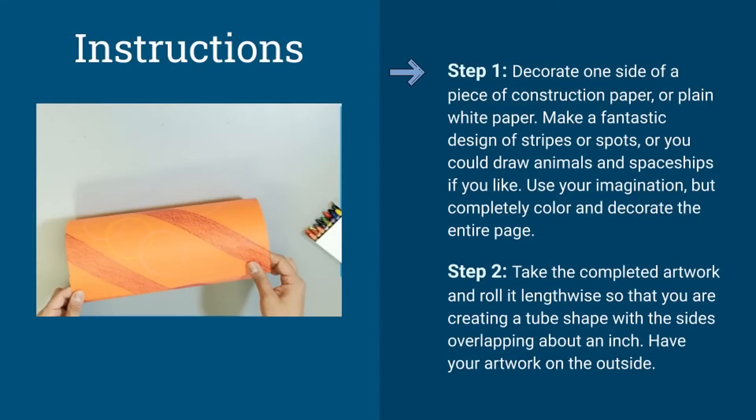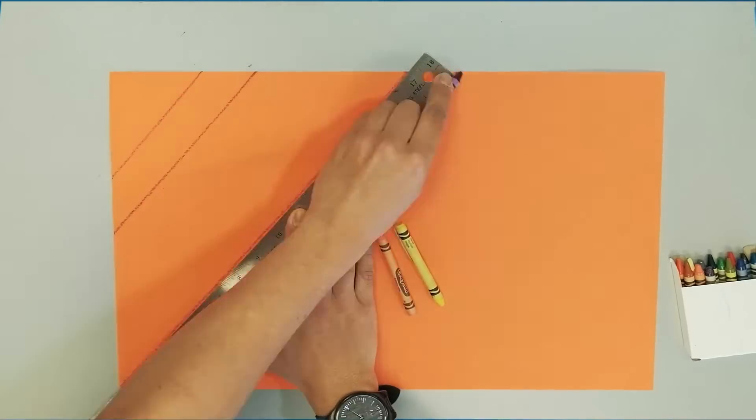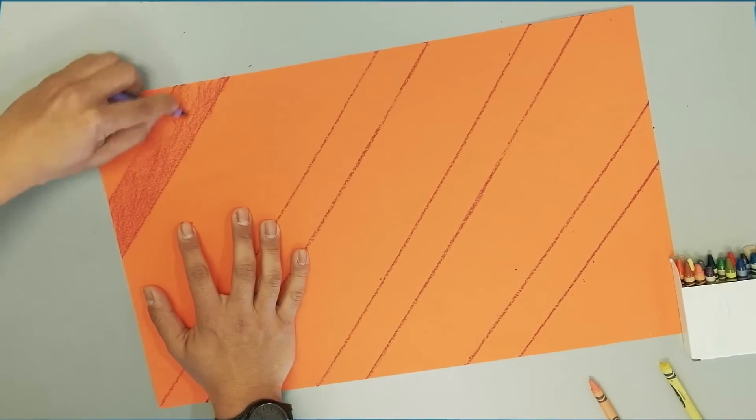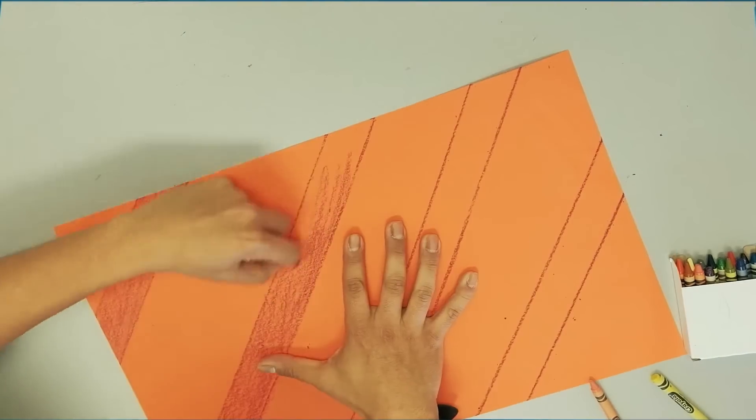Your first step is to decorate one side of a piece of construction paper or plain white paper. You can make a fantastic design of stripes or spots, or you could draw animals and spaceships if you like. You can use your imagination in whatever way it takes you, but make sure you completely color and decorate the entire page.